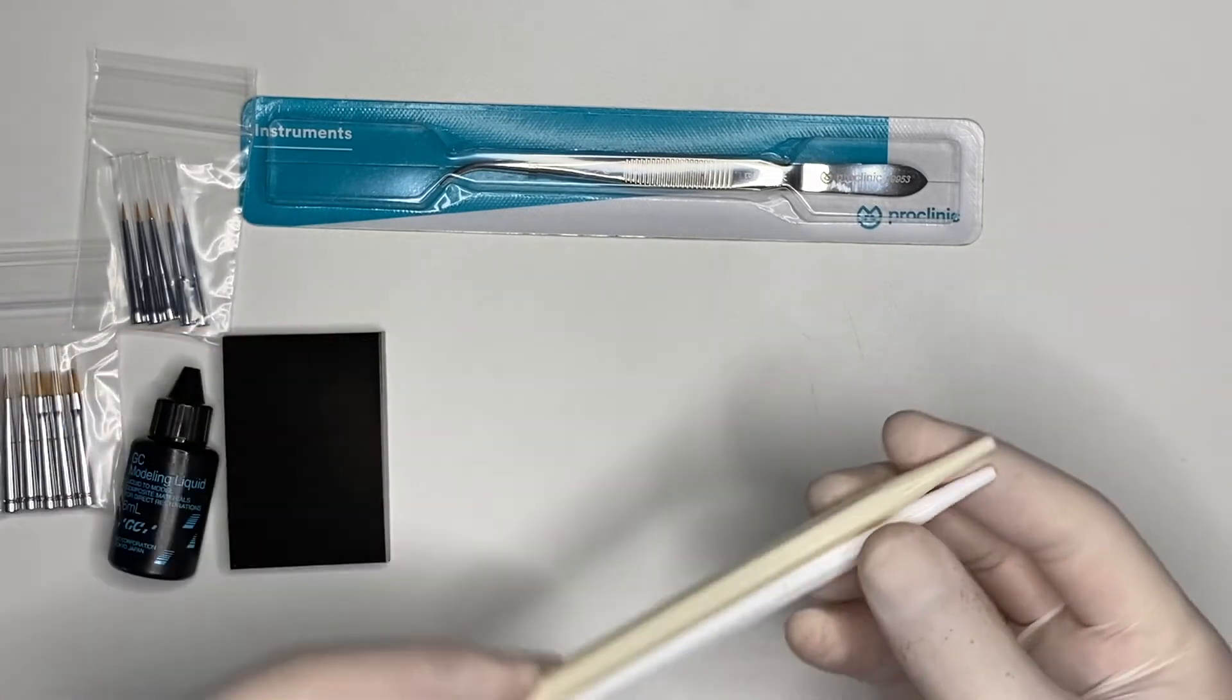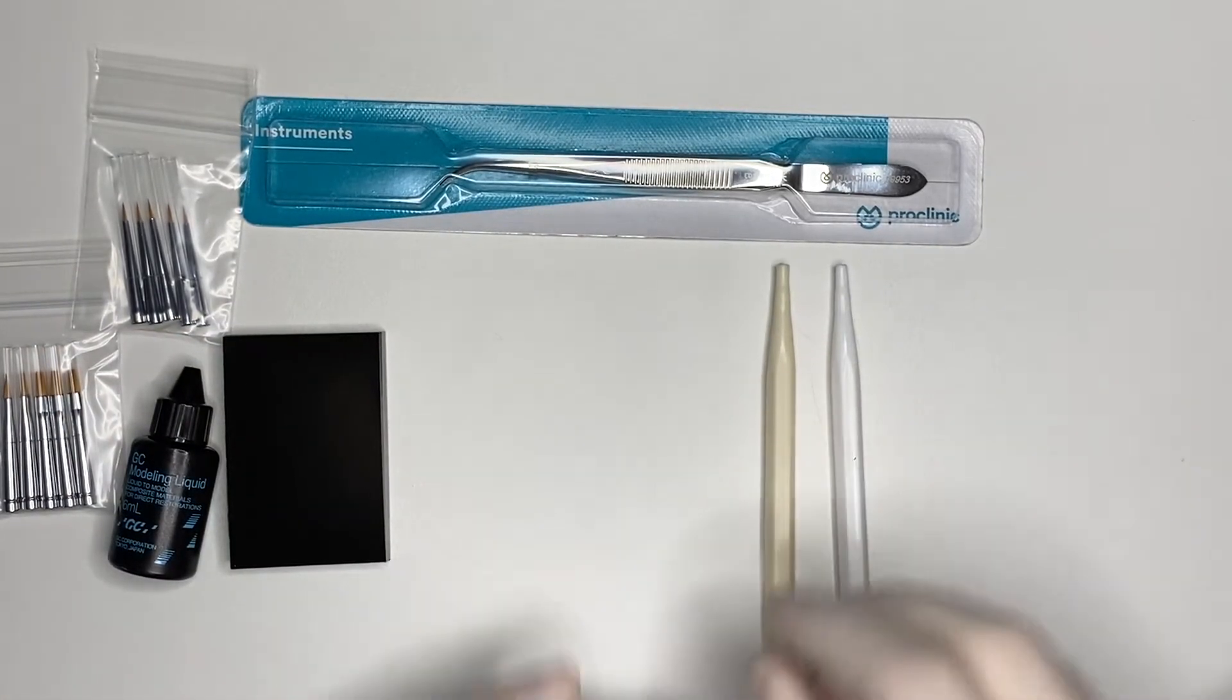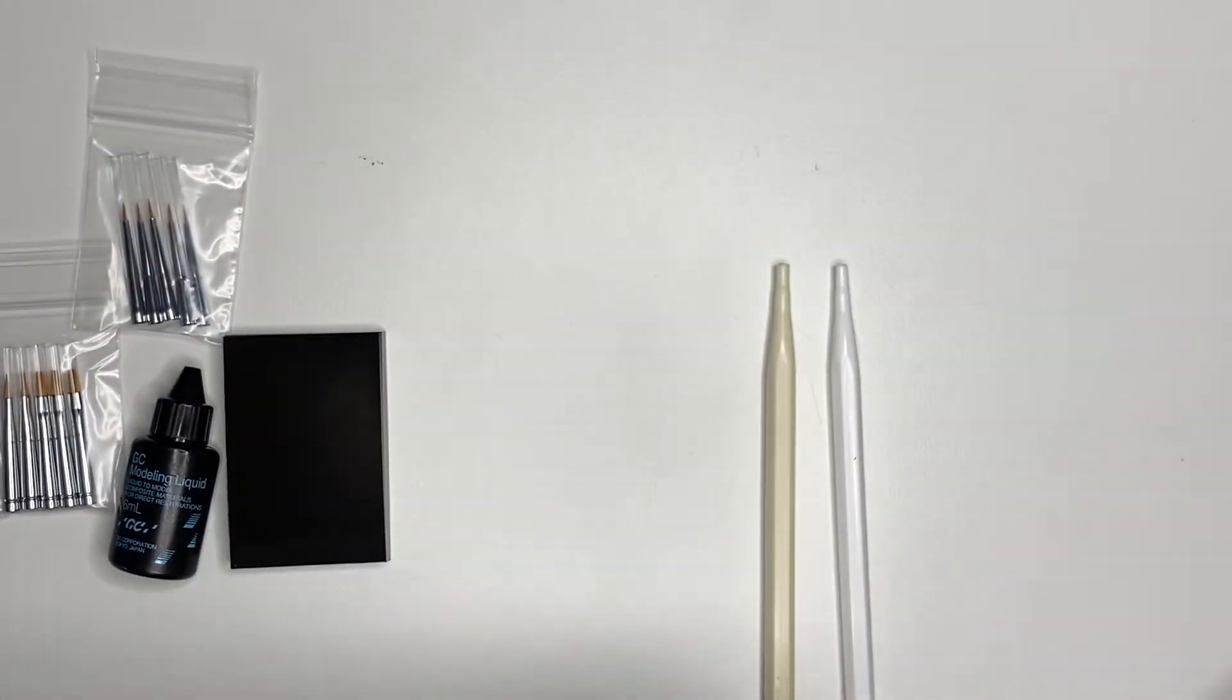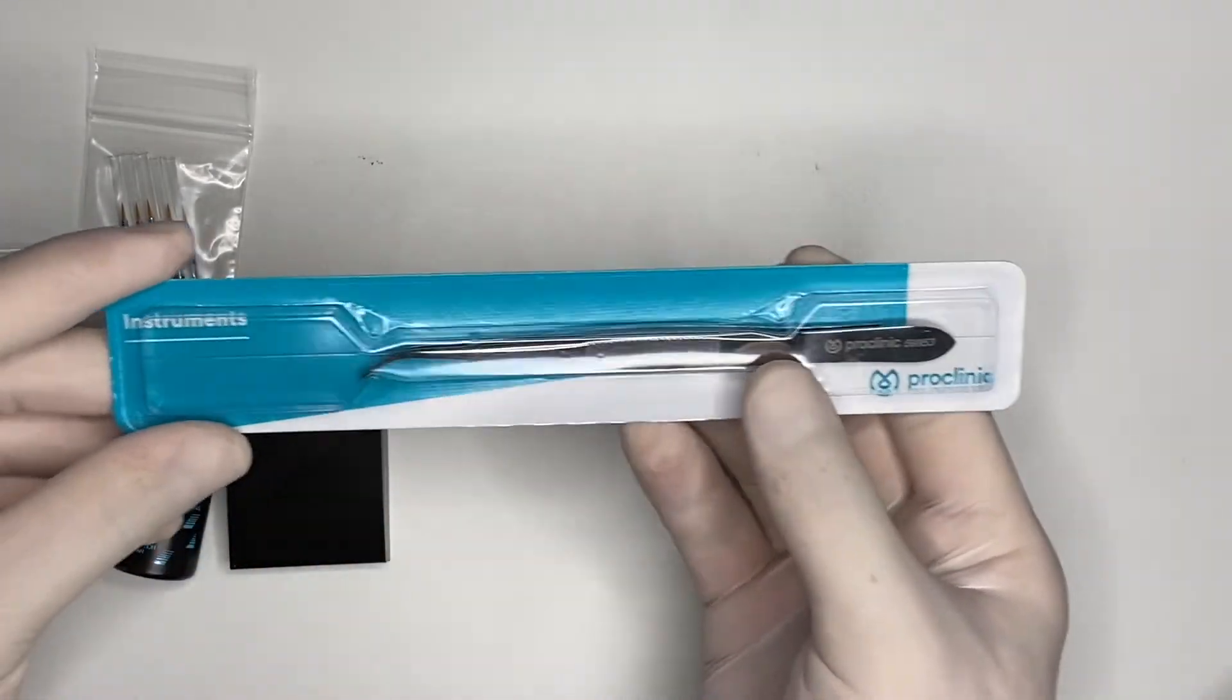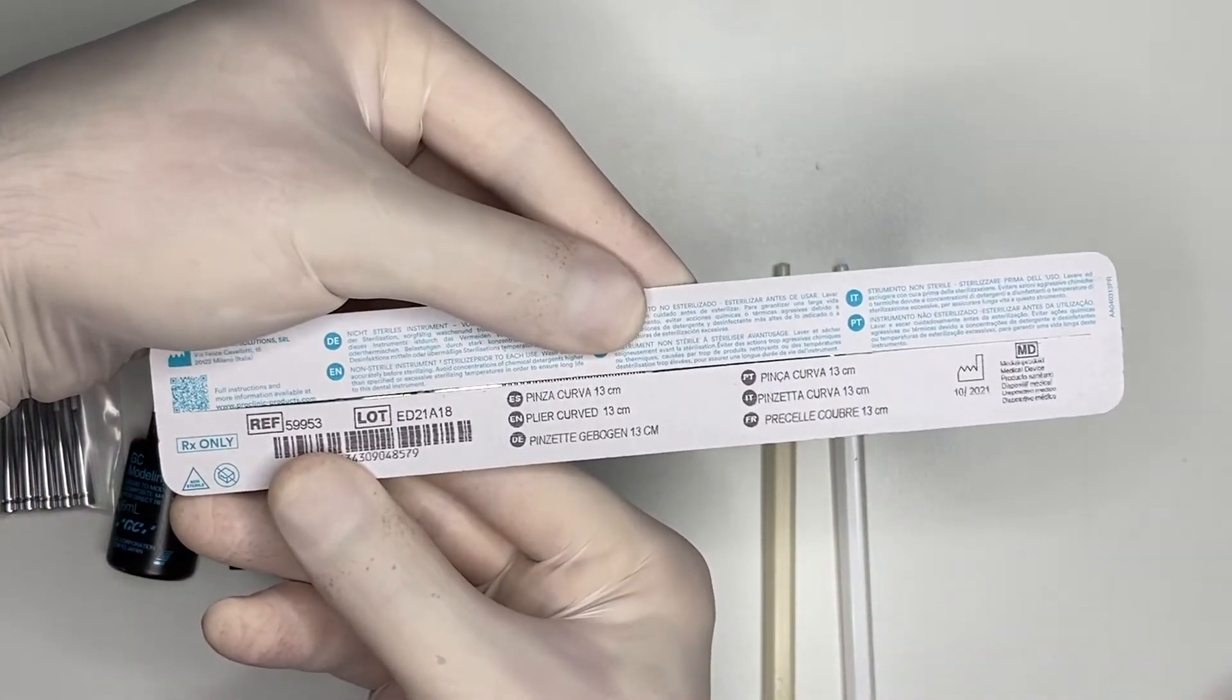And also two handles for your brushes. But what's really nice about these is what you can actually do with them. As you see, I've already prepared my pincer here. It's a Pro Clinic Standard 13-centimeter curved plier.